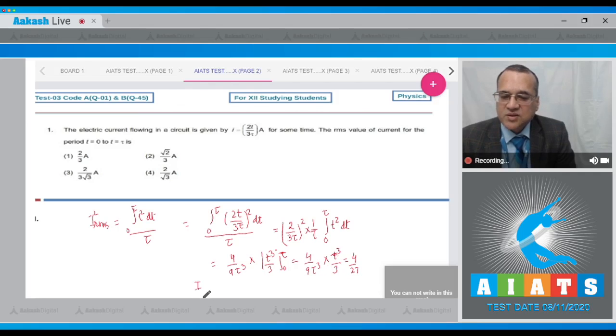So I RMS value is equal to root of this one, that is 4 by 27, the whole root. This becomes equal to 2 divided by 3 root 3, and the answer is in ampere. Let us look at the options. Option 3 is 2 by 3 root 3. Therefore the answer to this question is option number 3.